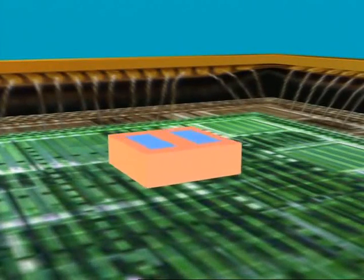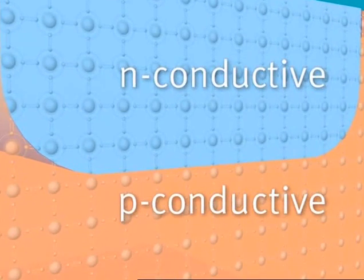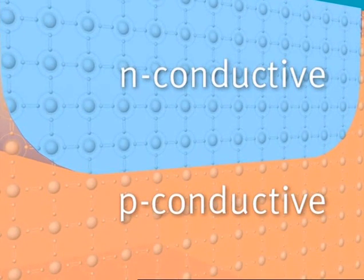Transistors are the smallest control units in the microchips. In the heart of an N-MOS transistor, for example, we find P and N-conductive layers of silicon crystals. An additional layer consists of silicon oxide and acts as an insulator. A layer of electrically conductive polysilicon is applied on top of it.